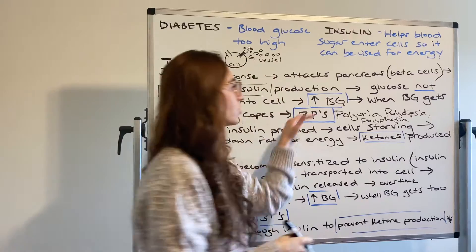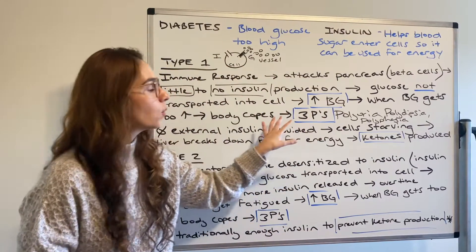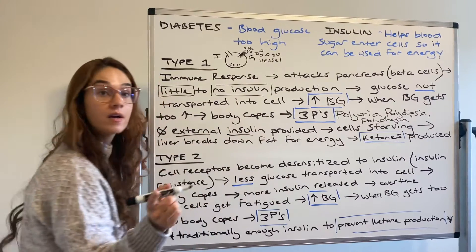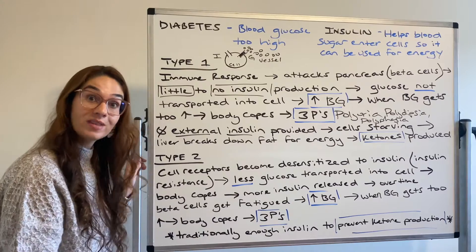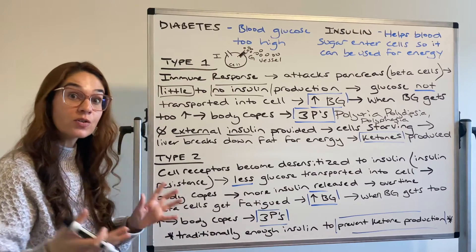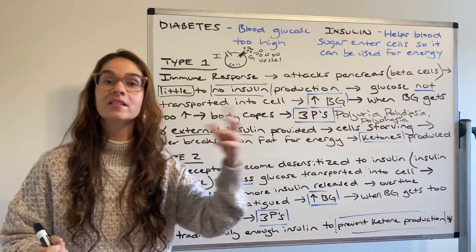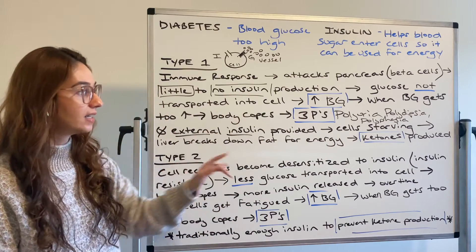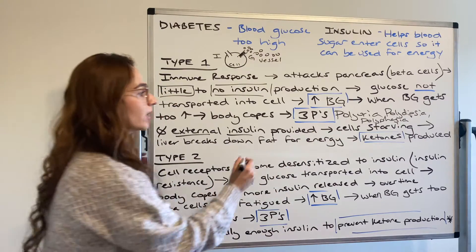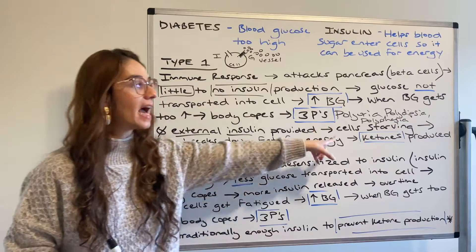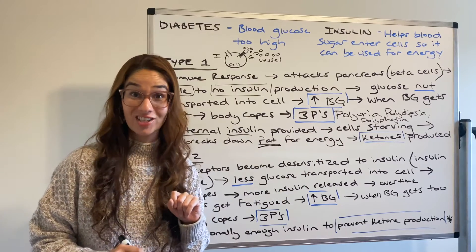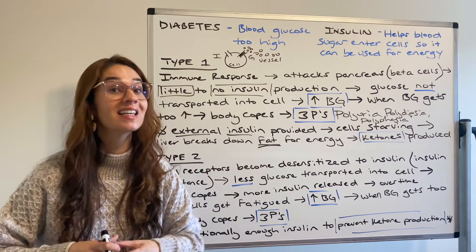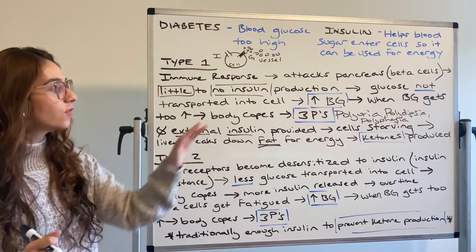Polyphagia. So this is your coping mechanism. Now when the three Ps occur, if you have no external insulin — remember, type one diabetics usually don't know they have diabetes — they can get very sick and go into DKA because of undiagnosis. So if no external insulin is provided, the cells and your liver start to break down fat for energy. That is where you get ketone production, and ketones can make us very sick. They can put us in an acidic state, which we'll talk about in a second.